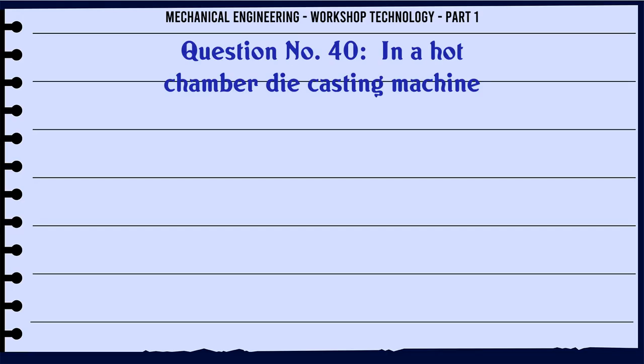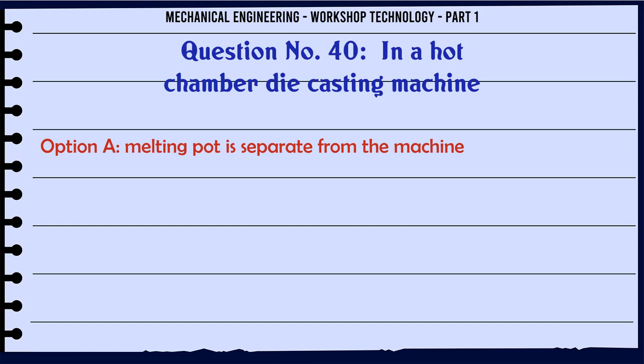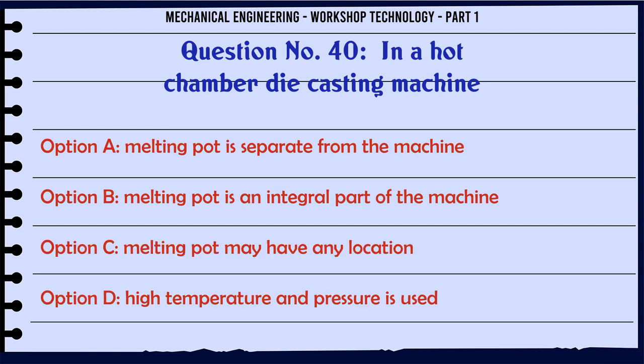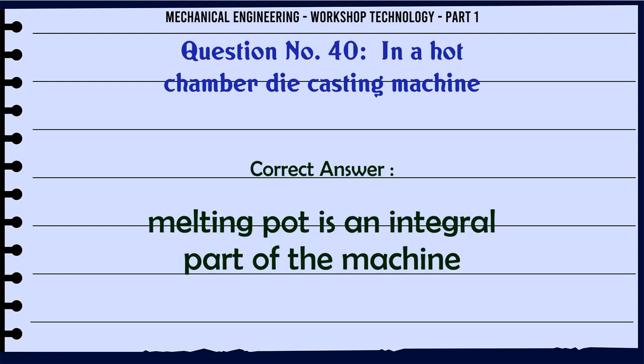In a hot chamber die casting machine: A. Melting pot is separate from the machine. B. Melting pot is an integral part of the machine. C. Melting pot may have any location. D. High temperature and pressure is used. The correct answer is: Melting pot is an integral part of the machine.